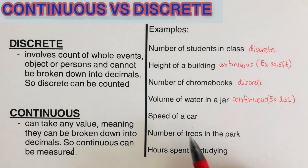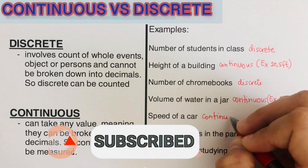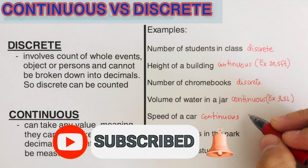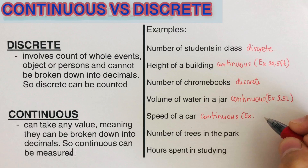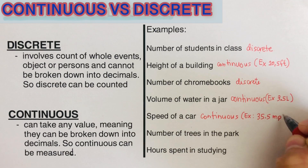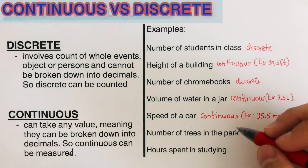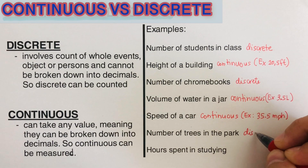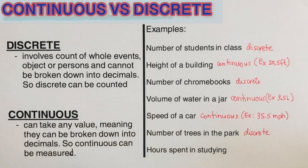An example is 3.5 liters of water in a jar. Speed of a car is also continuous because it can be in decimals — for example, 35.5 miles per hour. Number of trees in the park is discrete because you can't have half a tree.